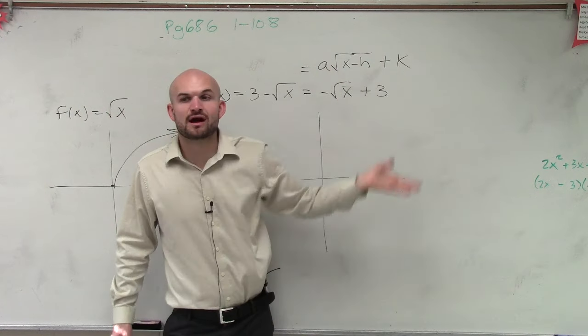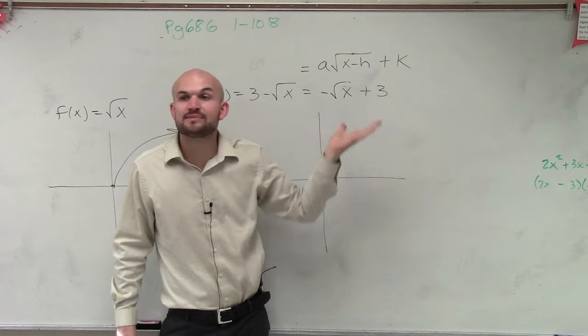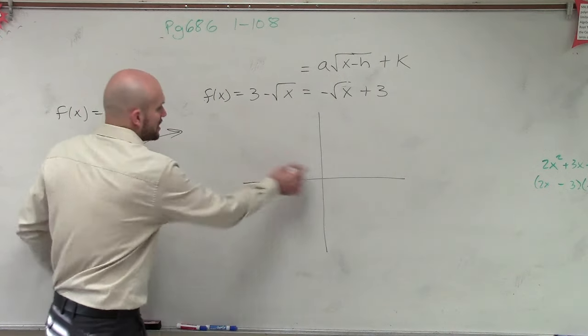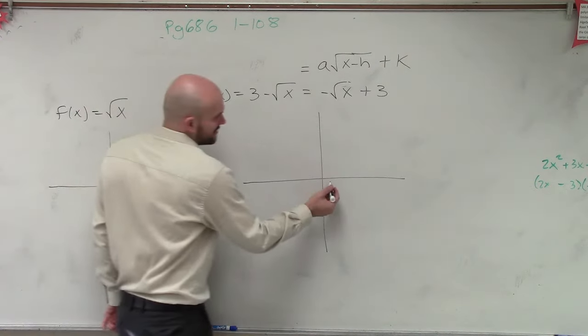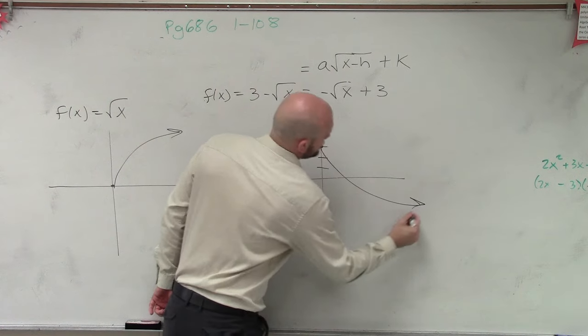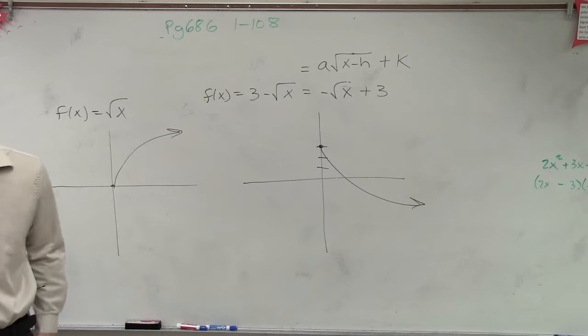And then k, remember, shifts the graph up or down. So since I'm plus 3, that means that's going to move the graph up three units. So rather than starting at 0, 0, the graph now starts at 1, 2, 3, and now goes in the downward direction.